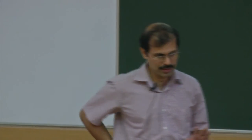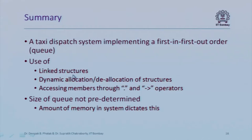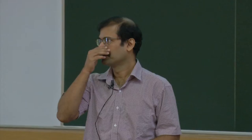This taxi queue example used linked structures — an important concept for dynamically maintaining information. It involved dynamic allocation and deallocation, member access through both dot and arrow operators, and a queue whose maximum size was not predetermined. We did not allocate a fixed array of 100 taxis; instead, the queue size is limited only by available memory. As long as memory can be allocated, you can keep adding taxis to the queue.